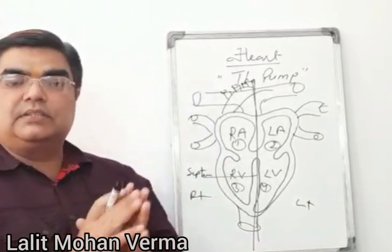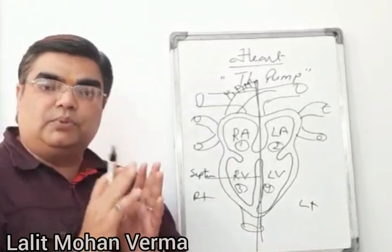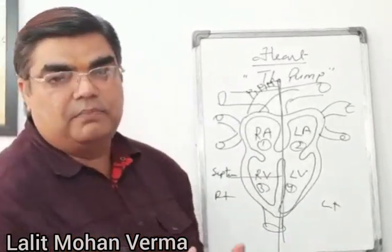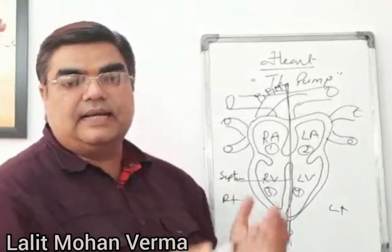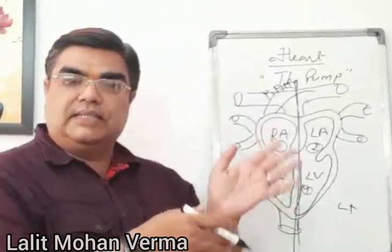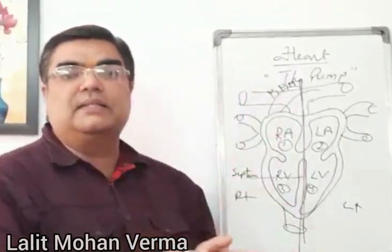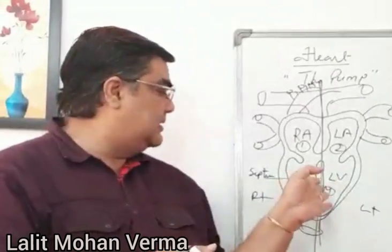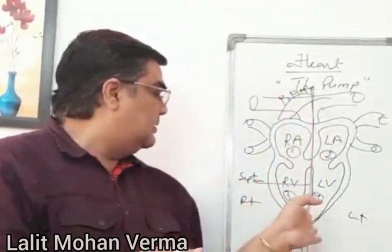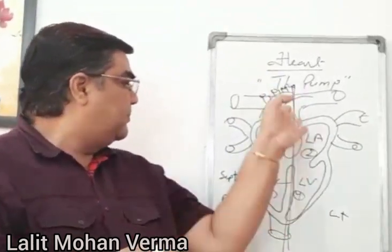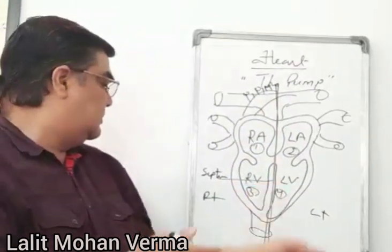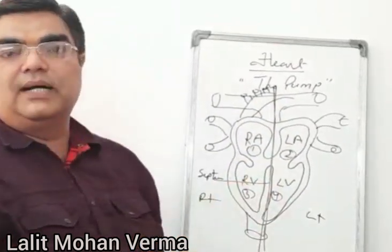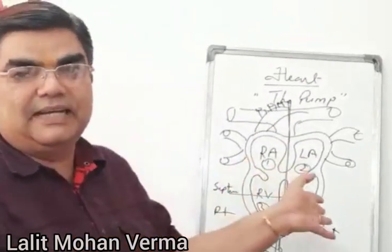Because the heart contains both oxygenated and deoxygenated blood, there is a need for separation of this blood, and this is possible due to the presence of the septum in between them.